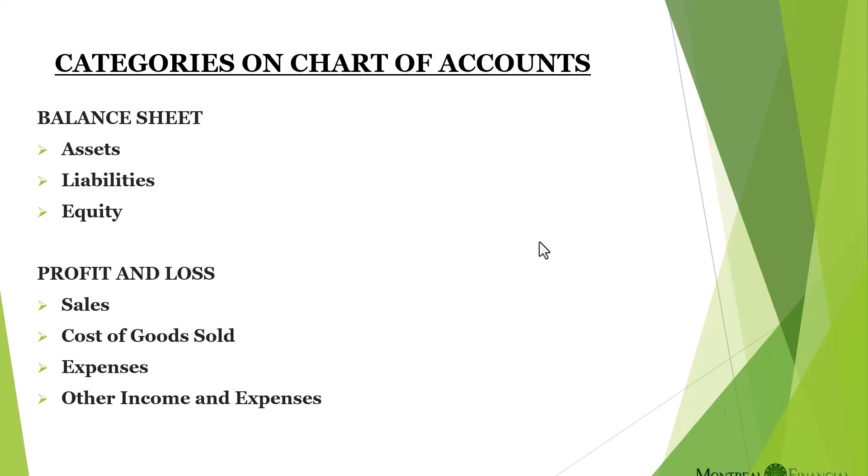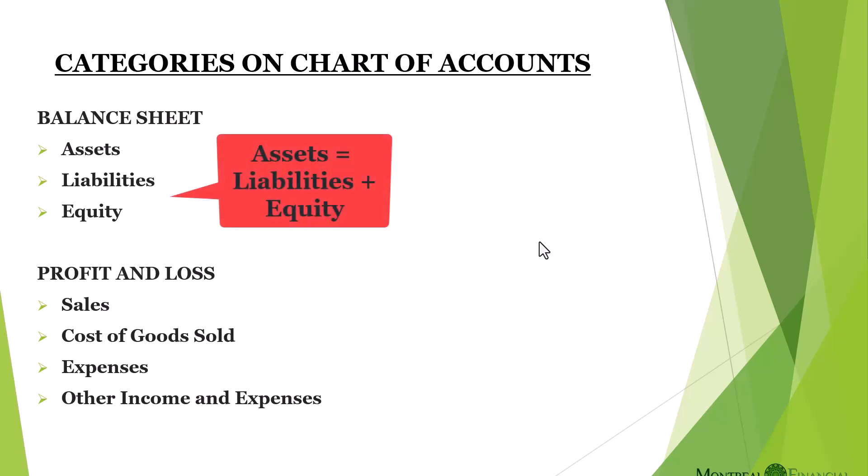One final thing to note is that assets on the balance sheet always equal liabilities and equity, which is why it's called the balance sheet — because it always balances. So that's all for part one.